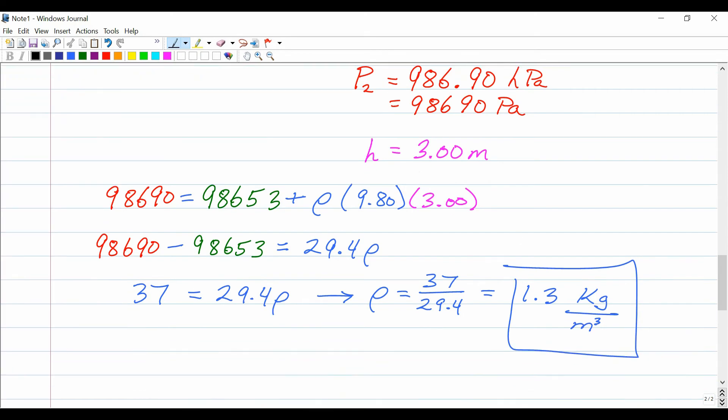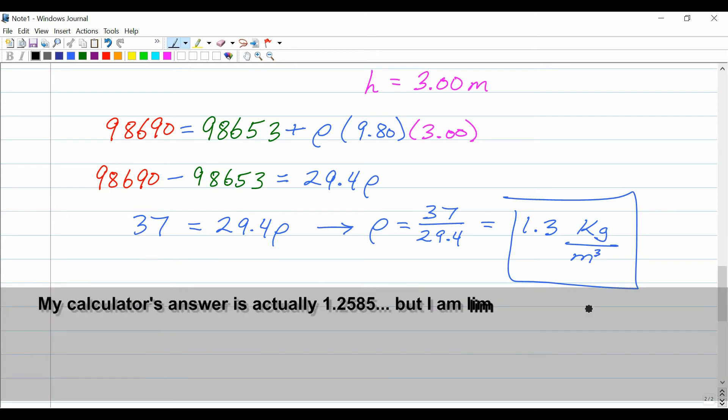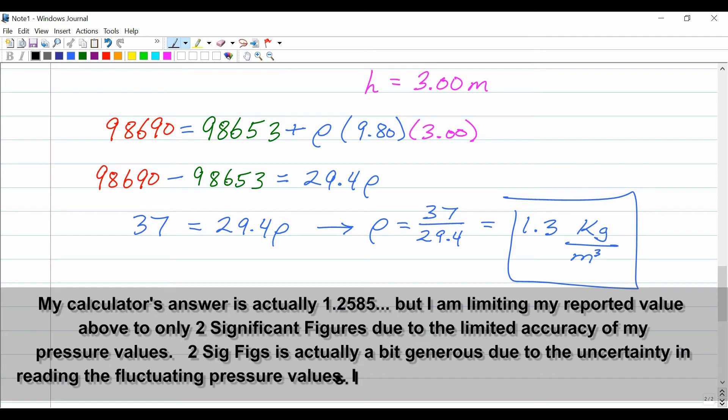So putting the numbers in gives me basically 98690 equal to 98653 plus rho times g, we're assuming it's 9.80, a common value used for the surface of the Earth, times the height of 3. And just doing the math, which I'll gloss over here, gives me a final answer of 1.3 kilograms per cubic meter. That's my measured value for the density of the air.